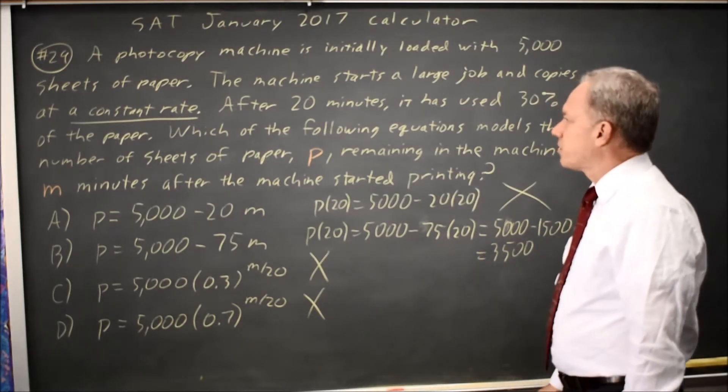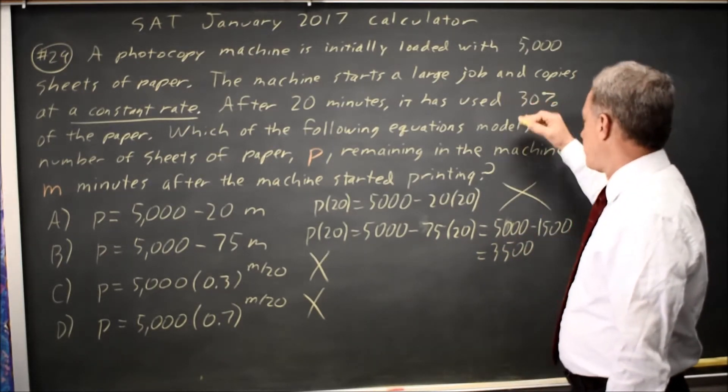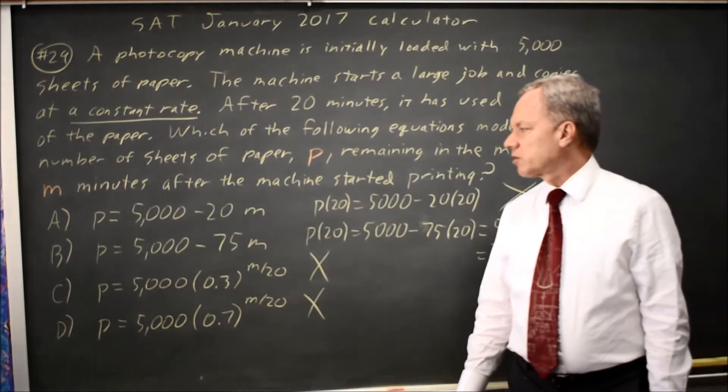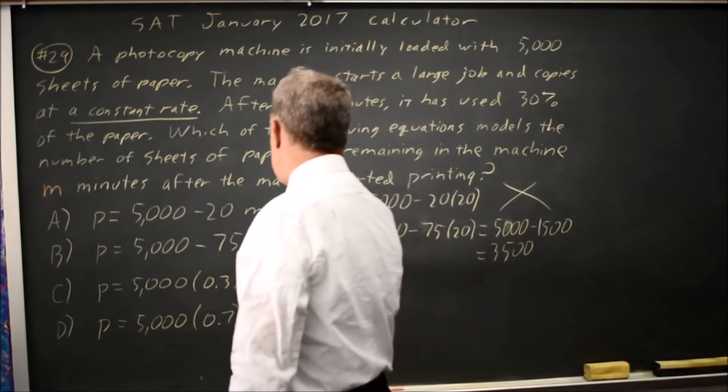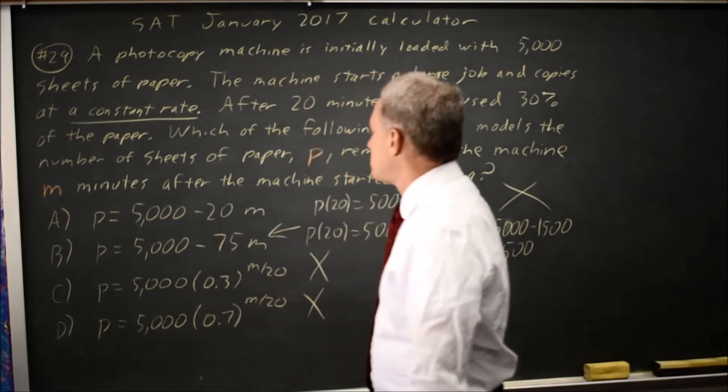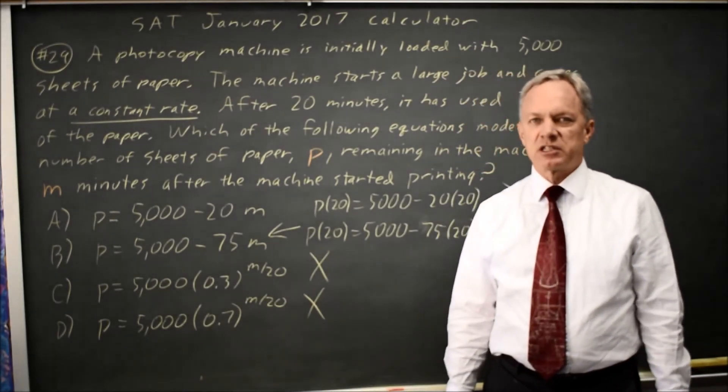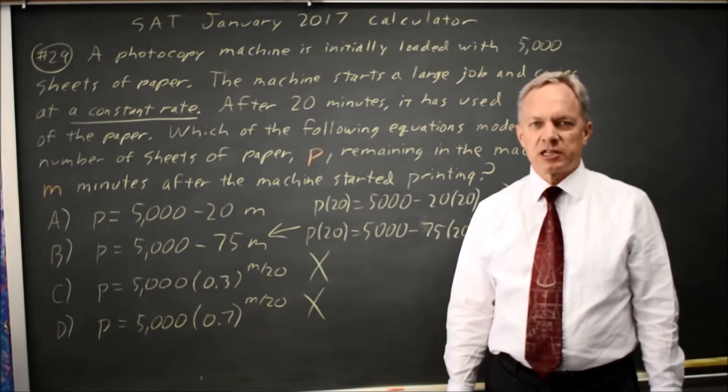Which is the correct amount because we've used 30% of our paper, 1,500, so we should have 3,500 sheets left. Our correct answer is B, because that matches at time 0, we have all 5,000. At time 20, we have 3,500 sheets, 70% of our supply because we've used 30%.